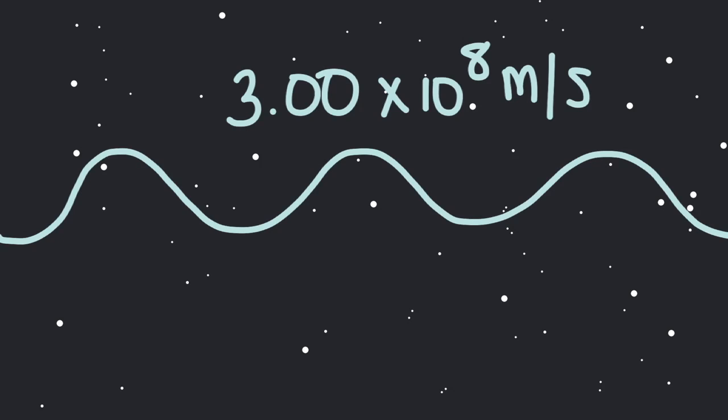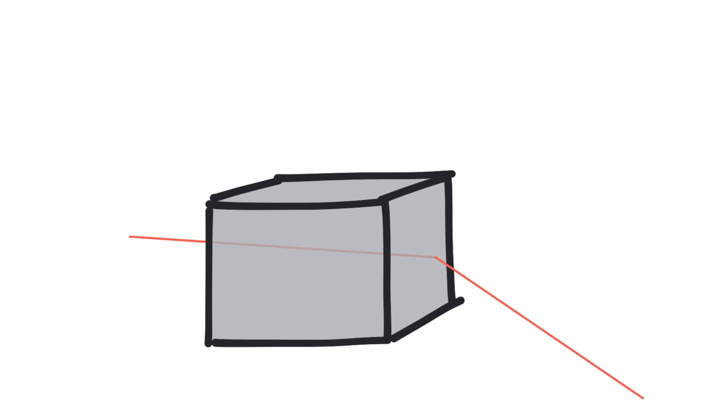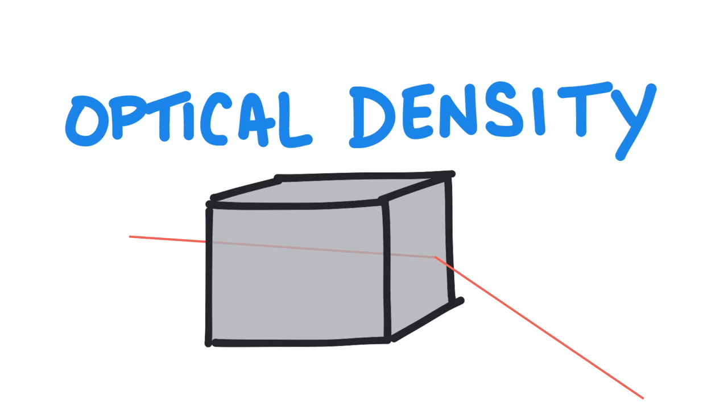When light travels through different materials, it slows down depending on the way the material interacts with the light waves. The slowing down of light is referred to as the optical density of the material. The more optically dense the material, the more the light will slow down.